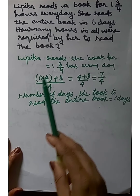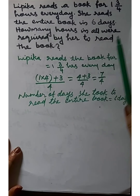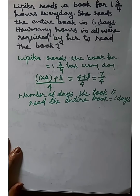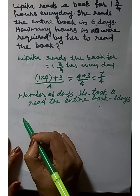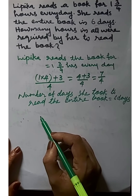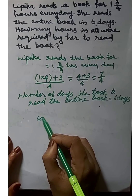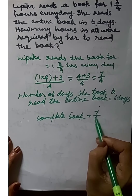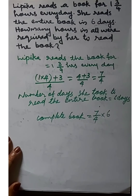Given in the question, the number of days she took to read the entire book is 6 days. We find the total number of hours required to complete the book: 7/4 × 6.